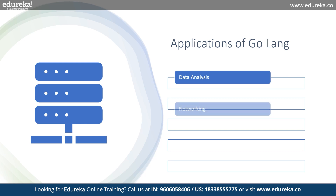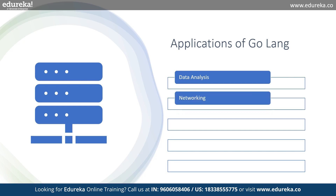In terms of networking, Go is a great choice for developing network applications due to its concurrency features. It provides good support for setting up network servers, implementing protocols, and managing many connections at once. Go is used to implement many networking tools including Docker and Kubernetes.